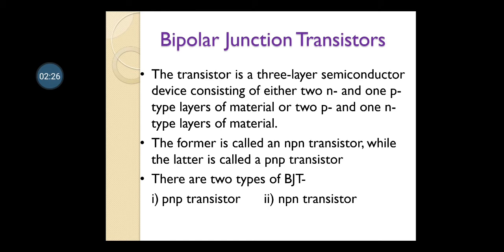There are two types of bipolar junction transistors. In a PNP transistor, there is P-type semiconductor, then N-type semiconductor, then again P-type semiconductor. Whenever P and N type semiconductors are joined, a depletion layer is always formed — as you know from studying diodes. That depletion layer is formed at each junction.